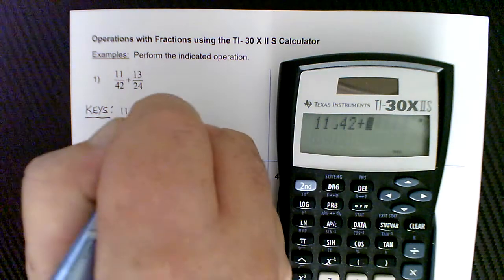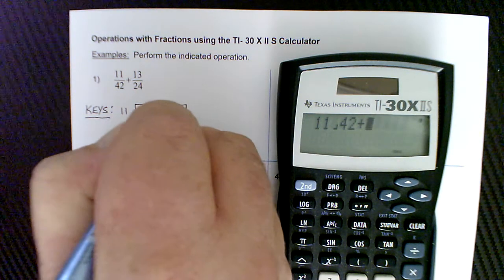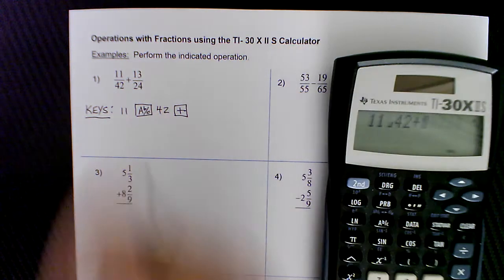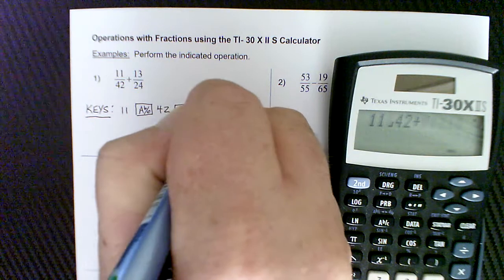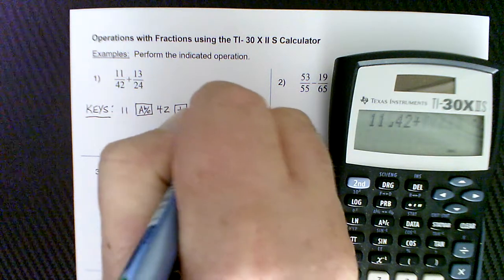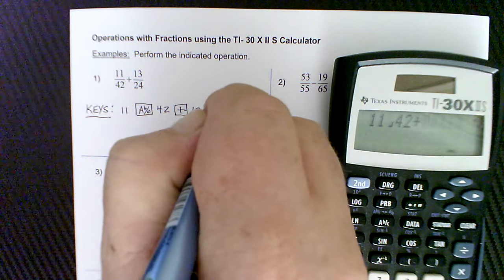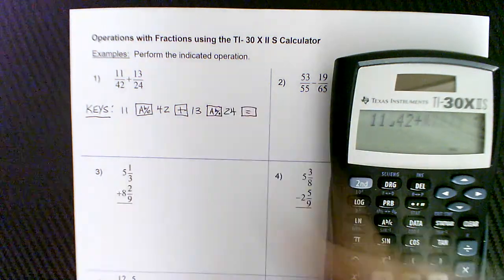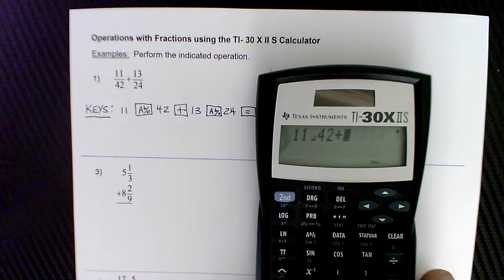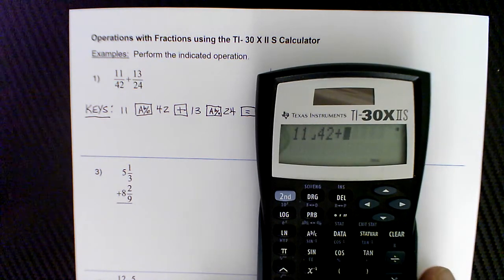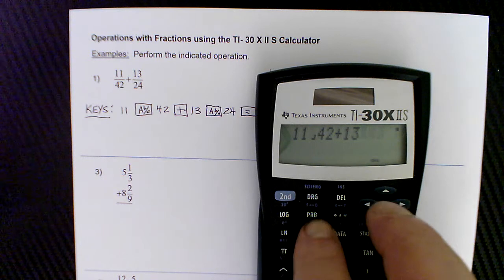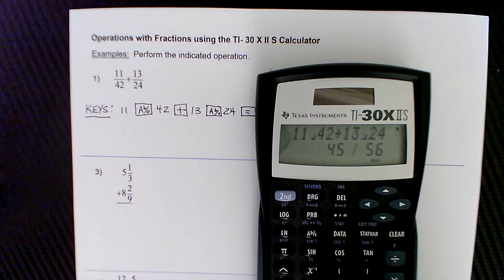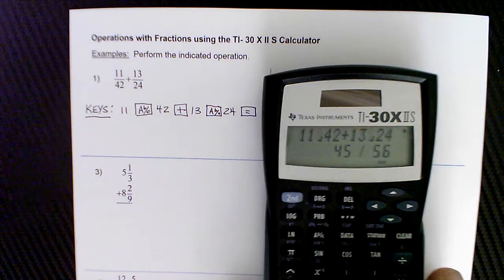And let me finish up the keystrokes here. So we'll put the plus in a box as well. Then I enter the second fraction, 13, and then hit the fraction key. Again, A with the B over C. Enter the denominator, 24, and press enter or equals. So, and that should do it. So finishing it up on the calculator. So it's at plus. There's 13, fraction key, 24. Hit enter. And it does all the work for us. So 45 over 56.